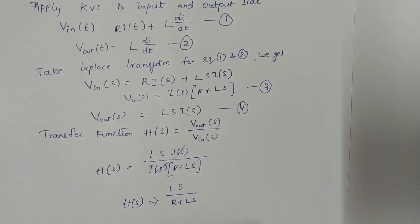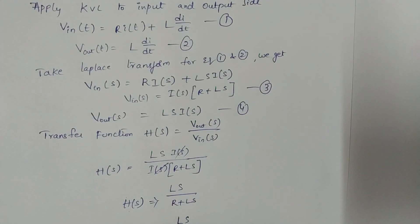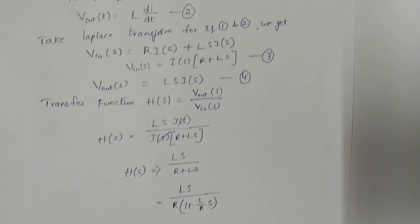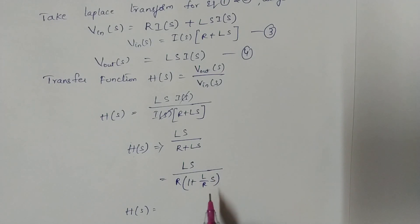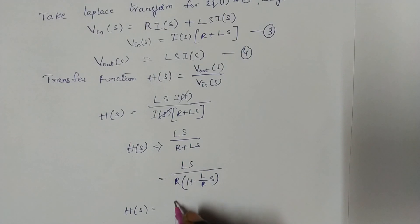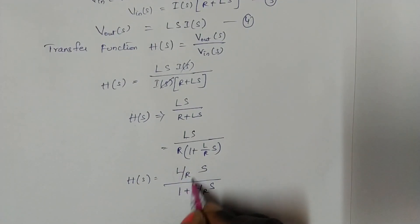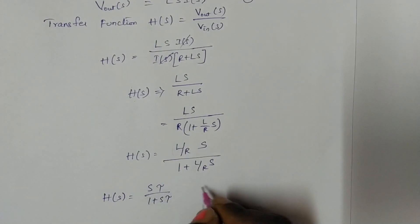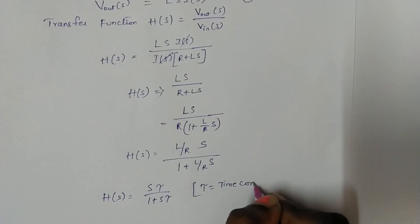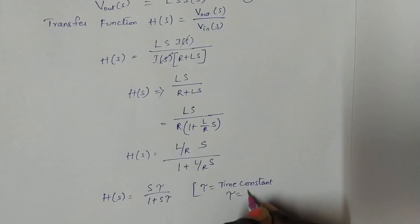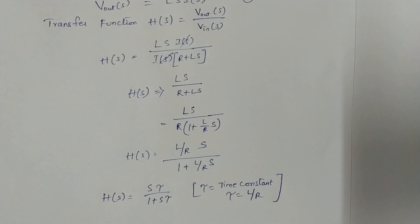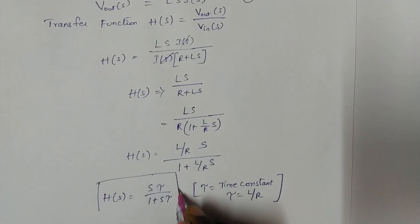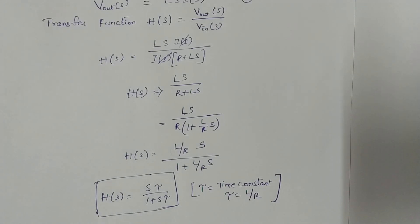Taking R common from the denominator, H(s) = Ls / [R·(1 + (L/R)·s)]. Simplifying, this becomes H(s) = (s·τ) / (1 + s·τ), where τ is the time constant. For the high pass RL network, the time constant τ = L/R. This is the transfer function for the high pass RL network.